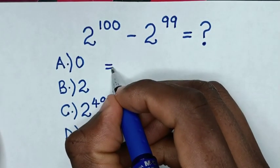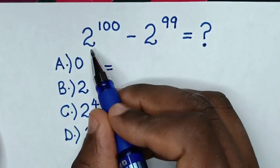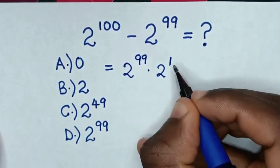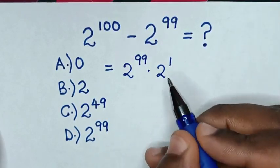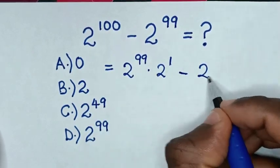So it will be equal to... in here we make 2^100 to have common 2^99. So this is same as 2^99 times 2^1, because power 99 plus 1 is power 100, then minus this 2^99.